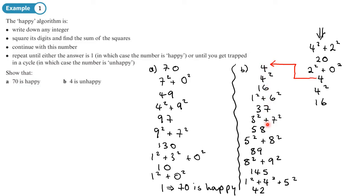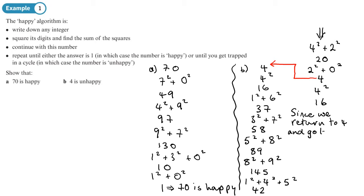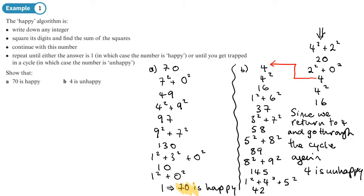We're going to end up going through this cycle again, so there's no point carrying on. After a certain number of steps — counting one, two, three, four, five, six, seven, eight steps — we're back to the start. Since we return to 4 and go through the cycle again, we can conclude that 4 is unhappy. It's just about following the instructions.